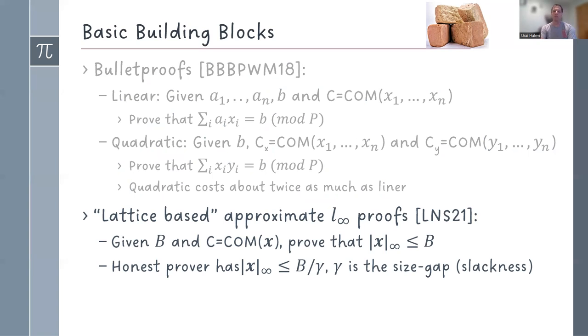The lattice-based proofs that we use are approximate L-infinity proofs. Here we have a bound B and a commitment to a vector, and you want to prove that the L-infinity norm of the vector is bounded by B. The honest prover needs to use a shorter vector. So if you want to prove a bound of B, as an honest prover you need to use a vector whose actual L-infinity norm is B over gamma, where gamma is the size gap of your system, and gamma is a parameter. So this we use, we just take it from the literature, and now on top of that we build all the proofs that we need.